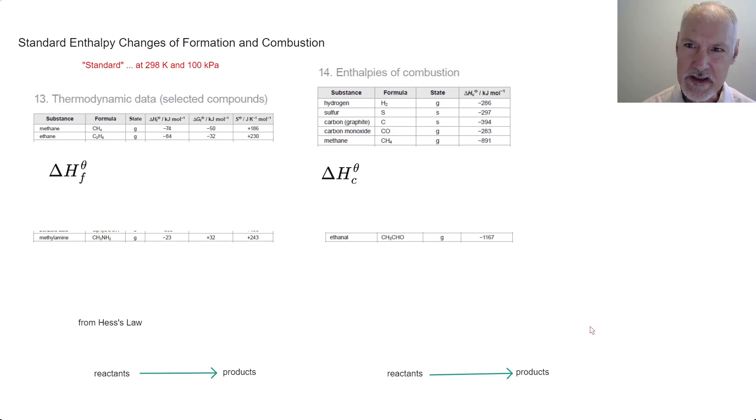Now what about enthalpy change of formation? This data is in your IB data booklet table 13, and we see the symbol for it right here. This symbol up top is used to imply standard conditions.